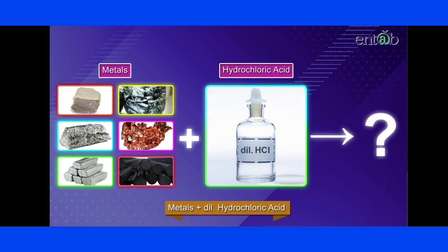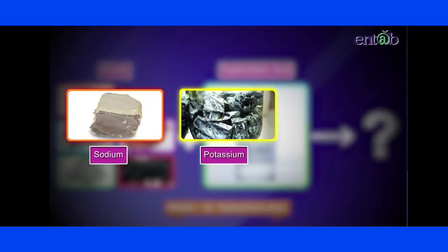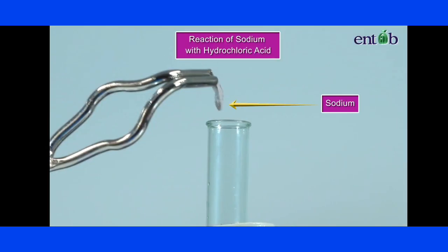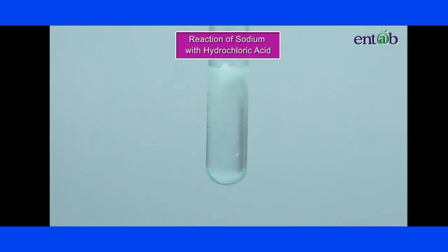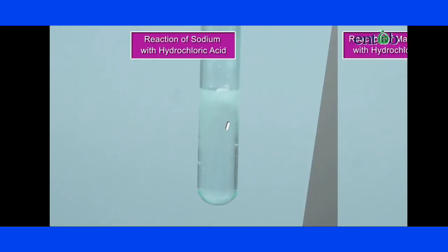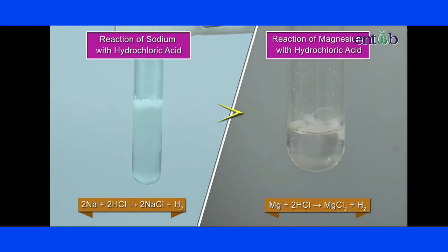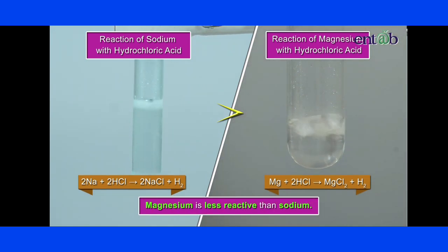For this, let's compare the reactions of sodium, potassium and magnesium with the dilute acid. The reaction of sodium is very violent while that of magnesium is less violent than sodium, indicating that magnesium is less reactive than sodium.